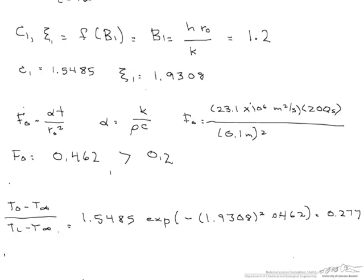So let's go ahead now and solve for this T0. That's 0.277 times TI minus T infinity, which is minus 270 degrees Celsius, plus 300 degrees Celsius, which is our T infinity. And we find that after 200 seconds, our center line temperature, or center of the sphere, is minus 225.3 degrees C.